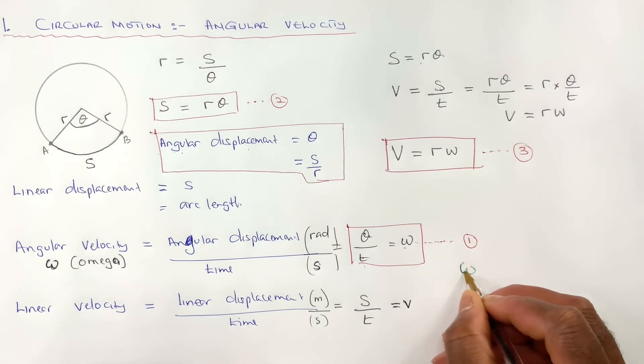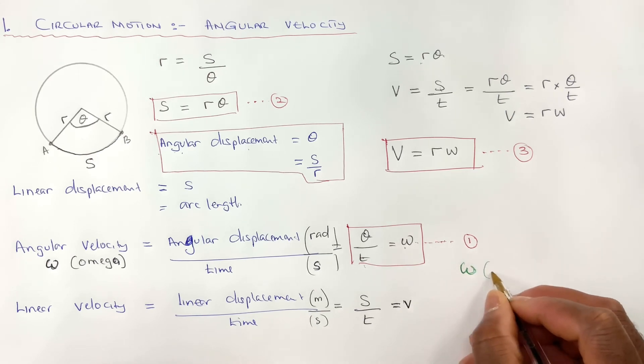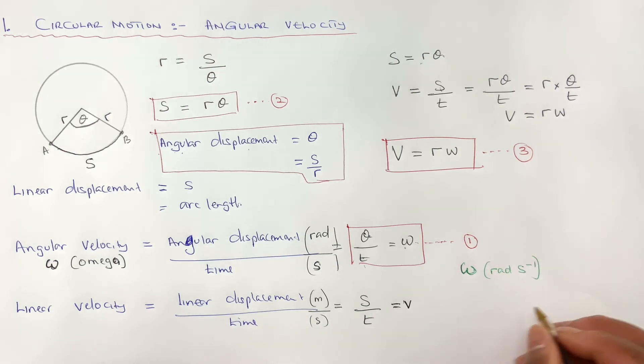So writing down the unit, if I write it down angular velocity, it's in radians, rad, per seconds. And linear velocity, it's in meters per second.